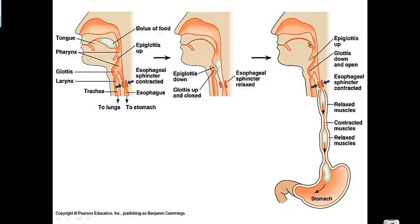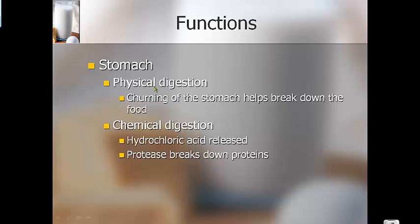Your esophagus contracts and releases — contracts and releases — those rhythmic waves are called peristalsis and push the food into your stomach. The bolus travels from your mouth, is turned in your pharynx, the glottis covers your windpipe so food can't enter your lungs, then it goes down the esophagus. In your stomach, physical digestion is the churning and turning of food, while chemical digestion involves hydrochloric acid, protease, and other enzymes breaking the food into smaller parts.